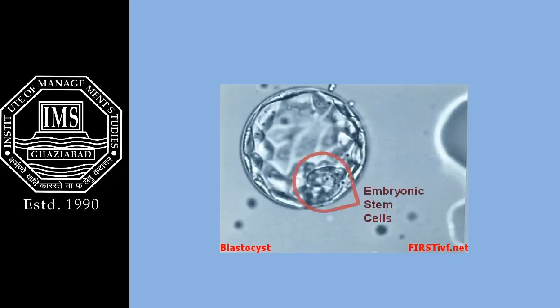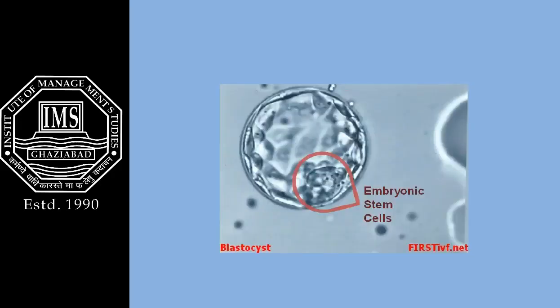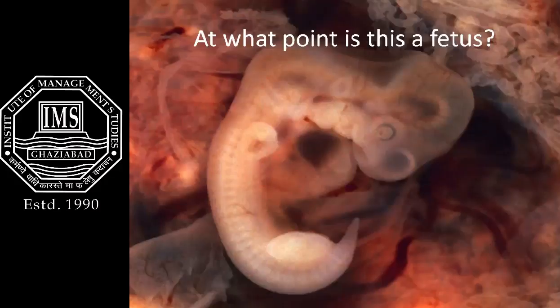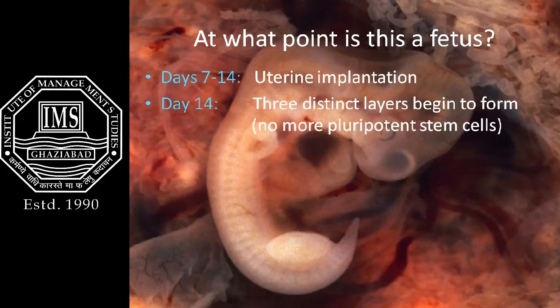When a baby is made the natural way, fertilization happens in the fallopian tube. It takes seven to fourteen days for the developing embryo to float down to the uterus and implant. When the embryo implants into the uterine wall, the clump now looks like a disc.